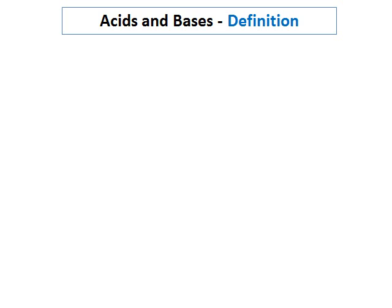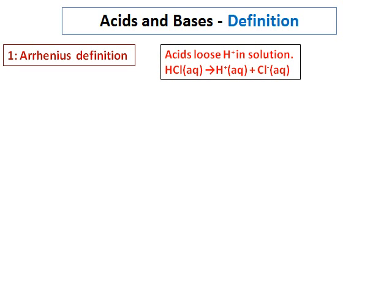There are different definitions for acids and bases. The first one is the Arrhenius definition. According to the Arrhenius definition, acids lose hydrogen ions in solution. For example, hydrochloric acid in solution will dissociate into hydrogen ions and chloride ions. Because it gives hydrogen ions in solution, HCl is an acid.